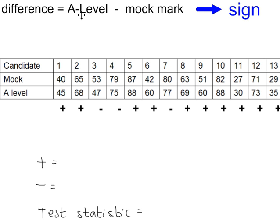Starting with the A-level, subtract the mock exam mark. First candidate: A-level 45, mock 40. The A-level is higher than the mock, give it a plus. Candidate number two: A-level 68, mock 65. The student performed better in the A-level, give that a plus. Candidate three: A-level 47, mock 53. The A-level is lower this time, give it a minus, and so on.